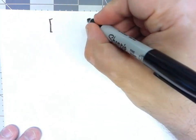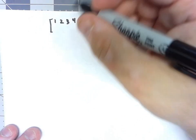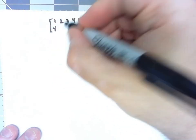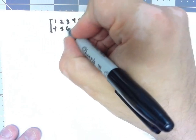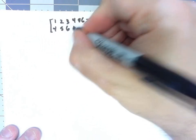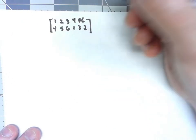Let's say we have in our matrix notation, we've got 1, 2, 3, 4, 5, 6. Let's say 1 goes to 4, 2 goes to 5, 3 goes to 6, 4 goes to 1, 5 goes to 3, and 6 goes to 2.